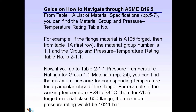For example, if the flange material is A105 forged, then from Table 1A, first row, the material group number is 1.1 and the group and pressure-temperature rating table is 2-1.1.